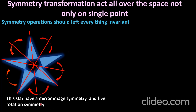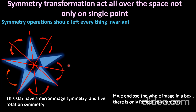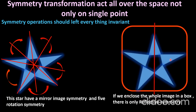If we enclose this image in a box, then there will be only one symmetry operation — only reflective symmetry along one line dividing the motif into two parts. There is no additional reflection symmetry because applying it would not act all over the space and would not leave everything invariant. So there is only one symmetry operation: the reflective symmetry that leaves everything invariant or unchanged around the motif.